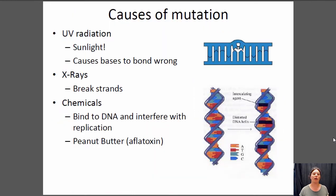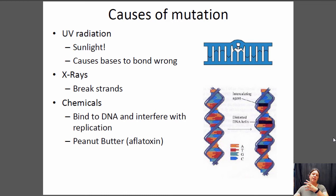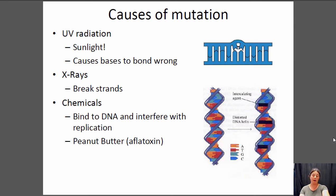So what kinds of things cause mutations? One of the big causes is UV radiation — basically sunlight. What sunlight does is cause bases within the DNA strand to bind to an adjacent base rather than across the strand like they're supposed to. When the enzymes that replicate your DNA come through, they have trouble reading that section and can put in the wrong base pair. So sunlight is really bad — that's why they always tell you to wear sunscreen, because you might get skin cancer. Skin cancer arises from mutations that accumulate particularly in parts of your body exposed to sunlight.